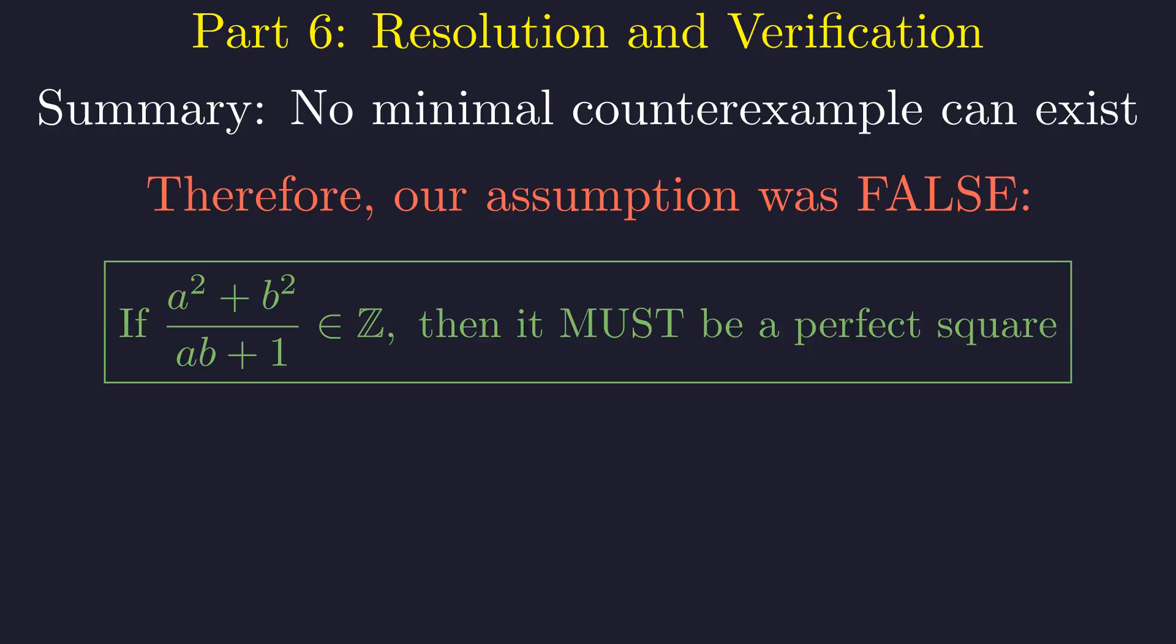The only possible source of this contradiction is our initial assumption that k could be a non-perfect square integer. We conclude that whenever the expression a squared plus b squared divided by ab plus 1 yields an integer for positive integers a and b, that integer must be a perfect square. The proof by infinite descent is complete.